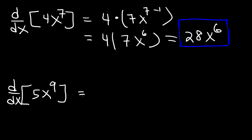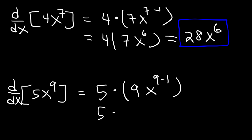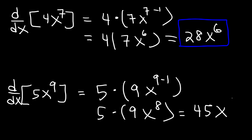For the next example, we have a constant of 5, and we need to find the derivative of x to the ninth power. It's going to be 9x raised to the 9 minus 1. 9 minus 1 is 8, and 5 times 9 is 45. So we get 45x to the eighth power. That's a simple way to use the constant multiple rule to find the derivative of a function.